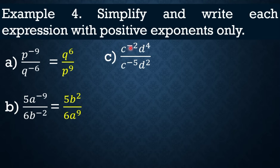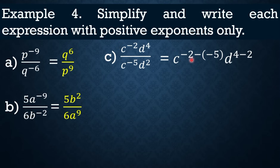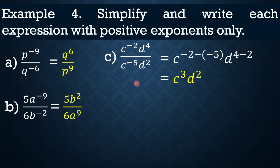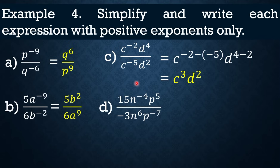Another example: C raised to negative 2 times D raised to 4, over C raised to negative 5 times D squared. Since the C terms have the same base, subtract exponents: negative 2 minus negative 5 equals negative 2 plus 5 equals positive 3. For D: 4 minus 2 equals 2. The final answer is C cubed D squared.